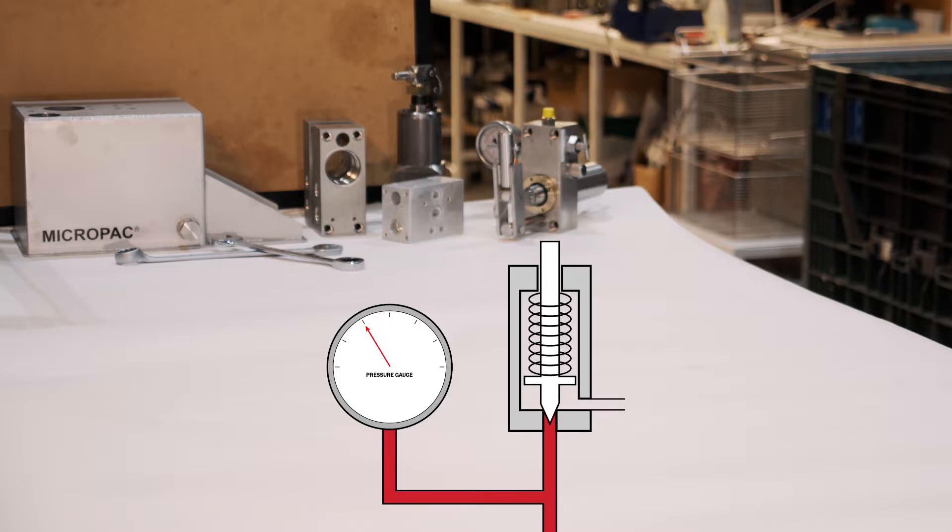We call this the cracking pressure. The plunger moves back again under the spring load now that the pressure is lower and resets again. You can see it opening, closing, opening, closing.